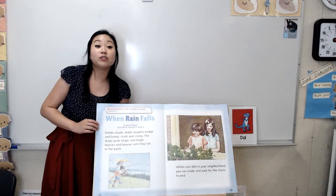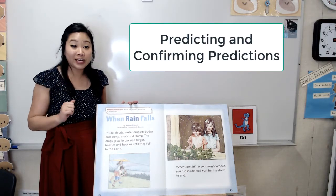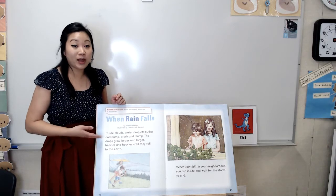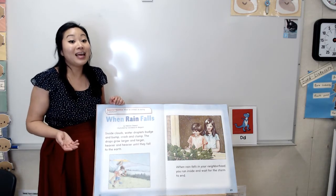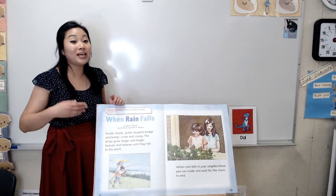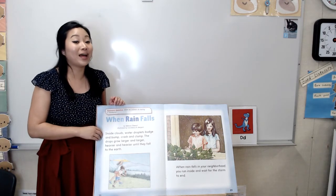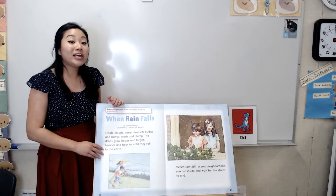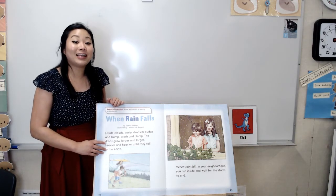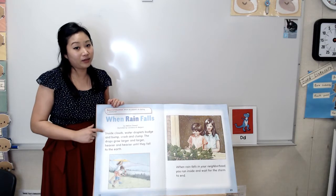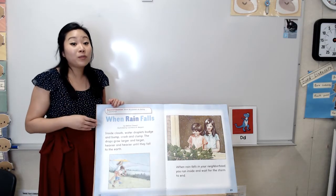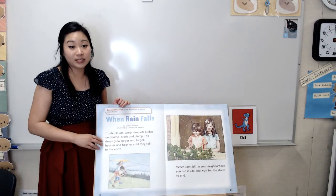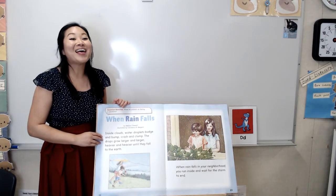Our comprehension strategy for today is predicting and confirming predictions. When we predict and check our predictions, it allows us to summarize what we read so far and to identify clues and events in the text, and also to use prior knowledge and personal experience to make inferences or guesses about what will happen next. So we take all that information, put it together, and it helps us make a guess. And as we read, we can check to see if our predictions are correct. Summarizing allows good readers to check their understanding as they read. When we summarize, it helps us keep track of what we're reading and focus our minds on important information and key details. If there are gaps in our understanding, we can always go back and reread a part.